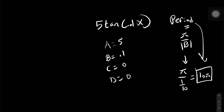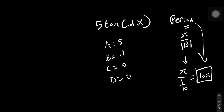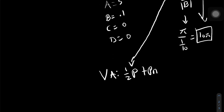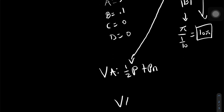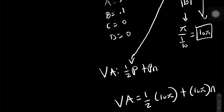Now that we know that 10 pi is our period, we can go ahead and try to find the vertical asymptote and zeros. The vertical asymptote, VA, is equal to 1 half of P plus Pn, where P is your period. So in this scenario, VA is equal to 1 half times 10 pi plus 10 pi times n, which simplifies down to 5 pi plus 10 pi n.